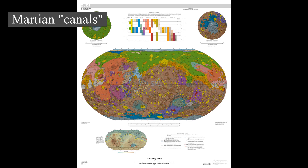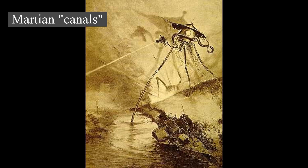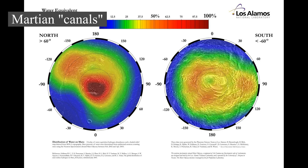His term, which means channels or grooves, was popularly mistranslated in English as canals. Influenced by these observations, the orientalist Percival Lowell founded an observatory with 30 and 45 centimeter telescopes, used for the exploration of Mars during the last good opportunity in 1894 and following oppositions. He published several books on Mars and life on the planet, which had a great influence on the public. The canali were independently observed by other astronomers like Henri Joseph Perrotin and Louis Thollon in Nice, using one of the largest telescopes of that time.